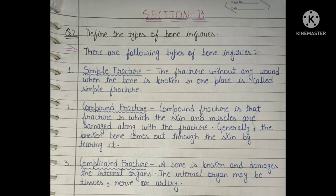Now we begin with Section B. Define the types of bone injuries. Simple fracture: the fracture without any wound when the bone is broken in one place is called a simple fracture. Compound fracture: compound fracture is the fracture in which the skin and muscles are damaged along with the fracture.